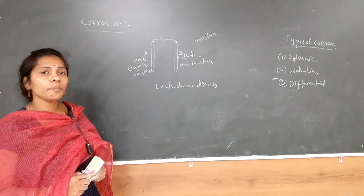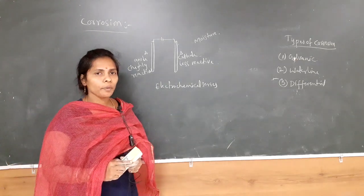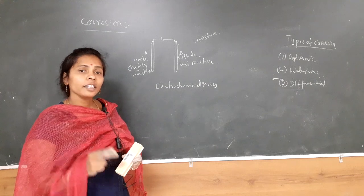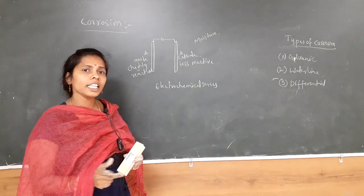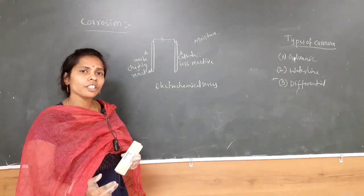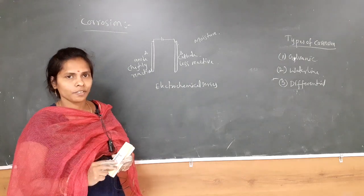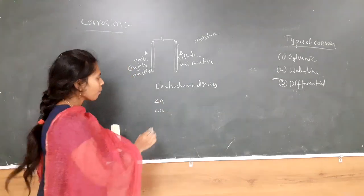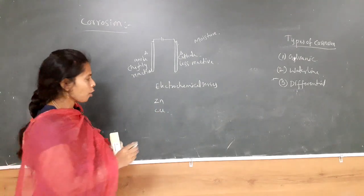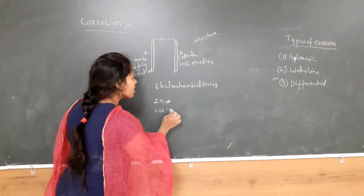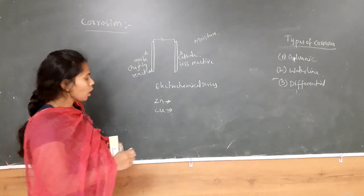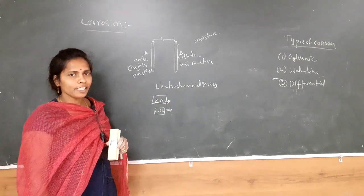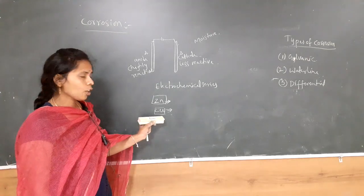Among the two metals, one is corroded and the other is protected. This is galvanic corrosion, also called bimetallic corrosion. When two dissimilar metals are exposed to the environment, the metal in the top position in the electrochemical series undergoes corrosion, and the metal in the bottom position is protected. For example, when zinc and copper are exposed to the environment, zinc undergoes corrosion and copper is protected, because copper is at the bottom and zinc is at the top of the electrochemical series.